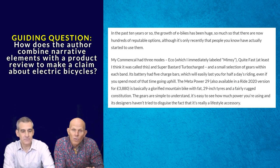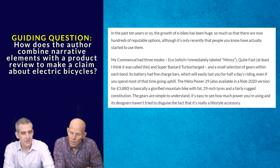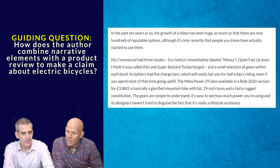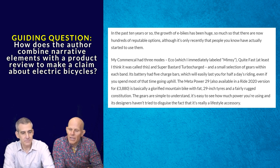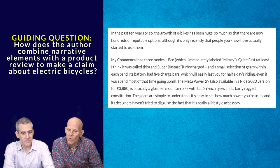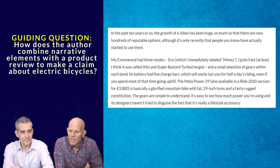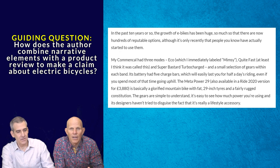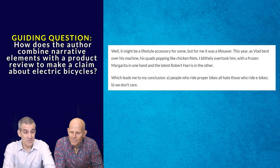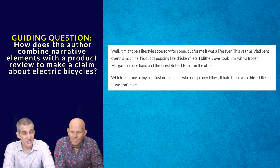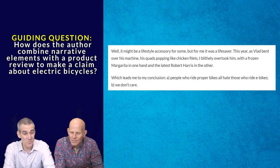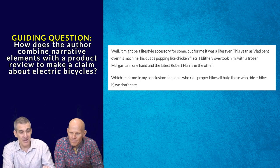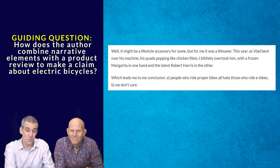The Metapower 29, also available in a Ride 2020 version for €3,880, is basically a glorified mountain bike with fat 29-inch tires and a fairly rugged constitution. The gears are simple to understand, it's easy to see how much power you're using, and its designers haven't tried to disguise the fact that it's really a lifestyle accessory. Well, it might be a lifestyle accessory for some, but for me, it was a lifesaver. This year, as Vlad bent over his machine, his quads popping like chicken fillets, I blithely overtook him with a frozen margarita in one hand and the latest Robert Harris in the other, which leads me to my conclusion. A, people who ride proper bikes all hate those who ride e-bikes, and B, we don't care.